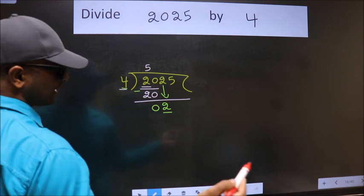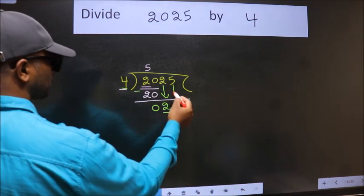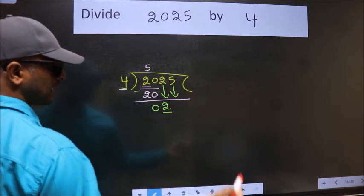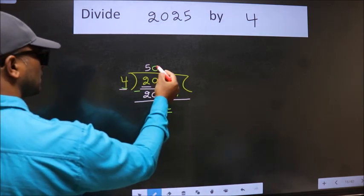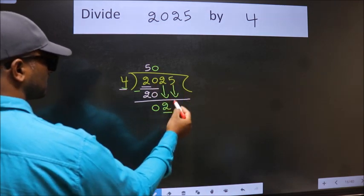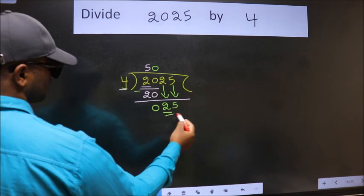So we should bring down the second number. And the rule to bring down second number is put 0 here. Then only we can bring this number down. So 25.